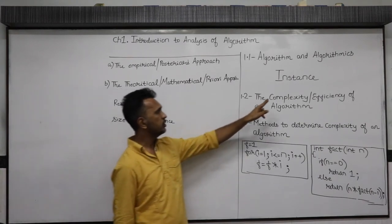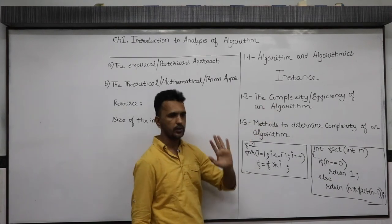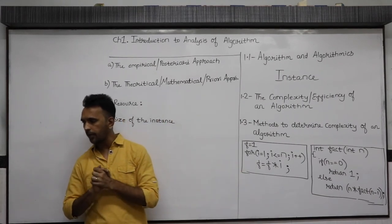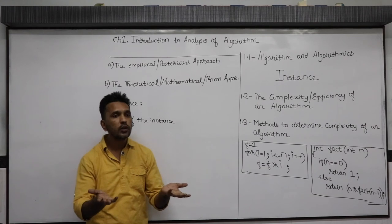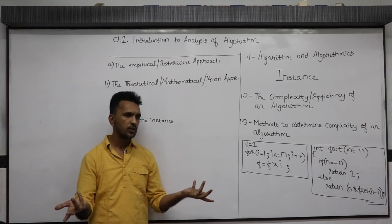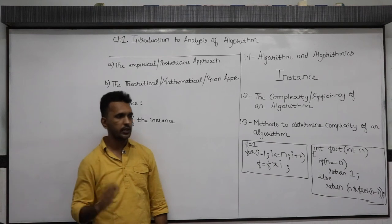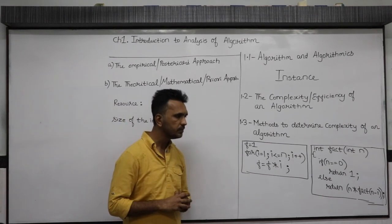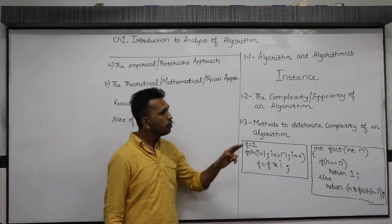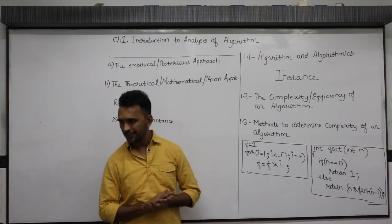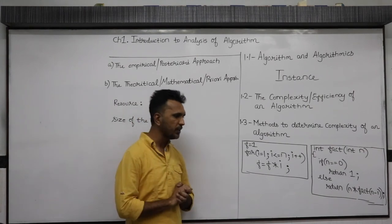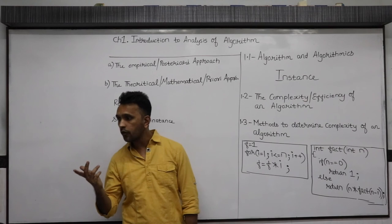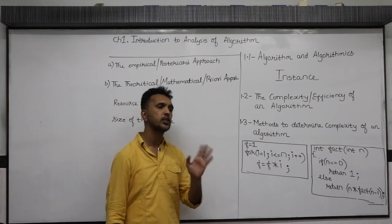Coming back: what is the meaning of time complexity? It is the amount of time a program or algorithm takes to execute. In very simple words, time complexity is nothing but execution time. Then, the space complexity of an algorithm is the amount of memory it consumes during its execution.